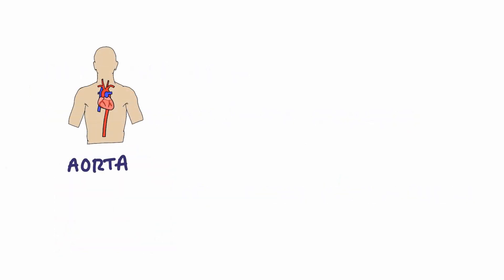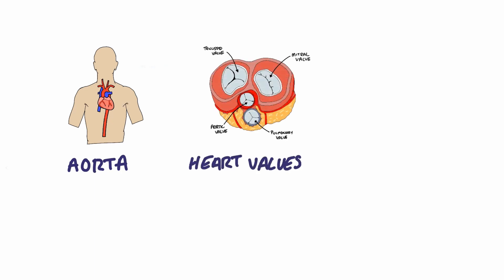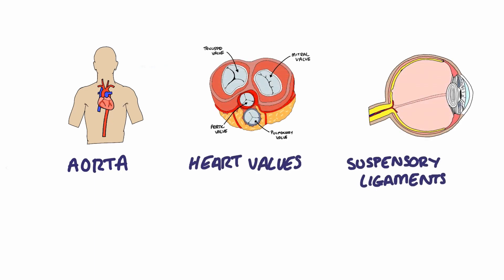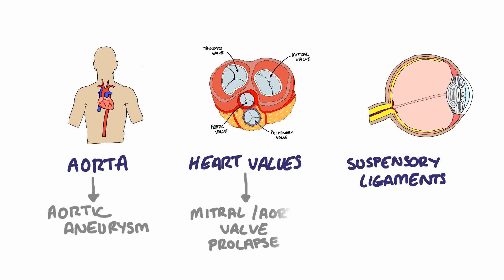Complications associated with Marfan's typically involve the areas in which elastic fibers are most abundant — that is, the aorta, the valves of the heart, and the suspensory ligaments of the eye. Therefore, patients with Marfan's are at significant risk of developing cardiac-related complications, such as an aortic aneurysm or prolapse of the mitral and aortic valve.